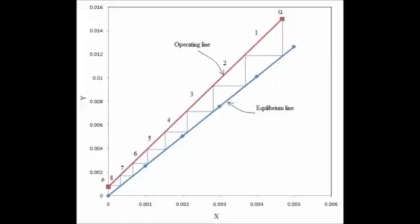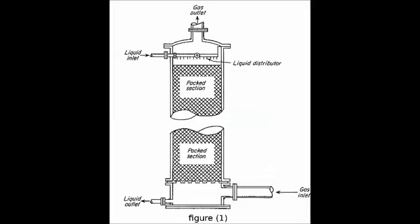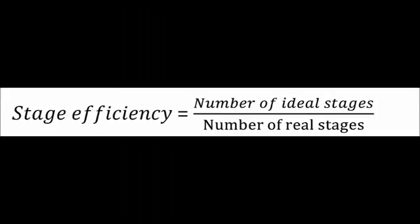The most important step in the design of a tray absorber is the determination of number of trays. The liquid enters from the top of the column, whereas gas is added from the bottom. The efficiency of the stages can be calculated as shown.